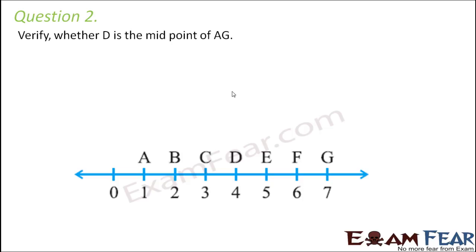Okay, question number 2. Verify whether D is the midpoint of AG or not. Okay, so A is here, G is here. So we have to find out if this point D is the midpoint of AG or not. Midpoint means D should lie exactly in between of AG. That means AD should be equal to DG. So the meaning of this is D is the midpoint of AG. That actually means that AD should be equal to DG.